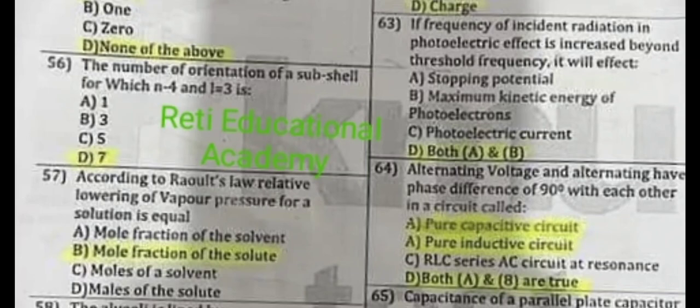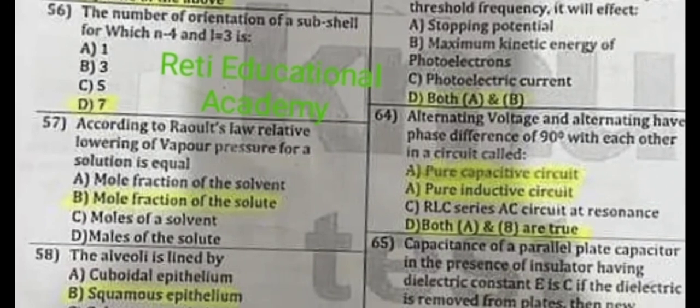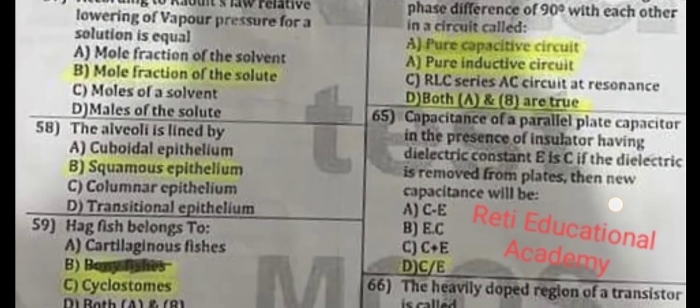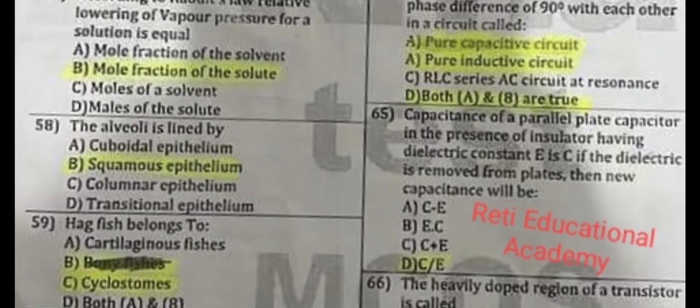Question number 63: If the frequency of incident radiation in the photoelectric effect is increased beyond the threshold frequency, it will affect both A and B. Question number 64: Alternating voltage and alternating current have a phase difference of 90 degrees with each other in a circuit — both A and B are true.